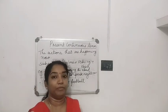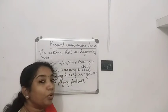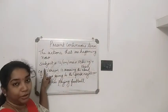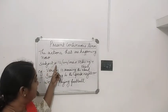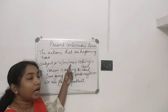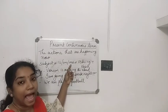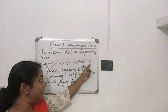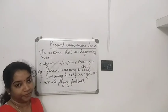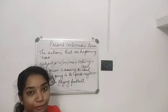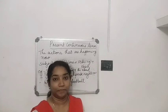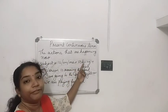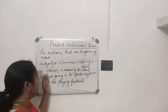So we will see how we have to write present continuous tense. What are the rules for that? The rule is: Subject plus is, am, or are, plus verb plus ING, plus object. For example: Subject plus is, am, or are, plus verb plus ING.